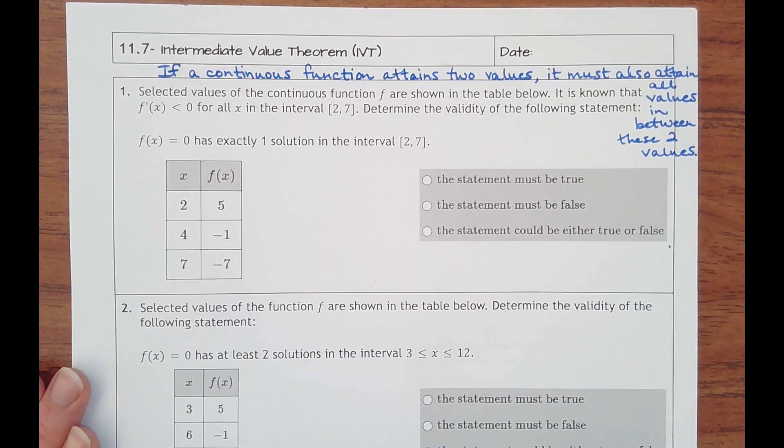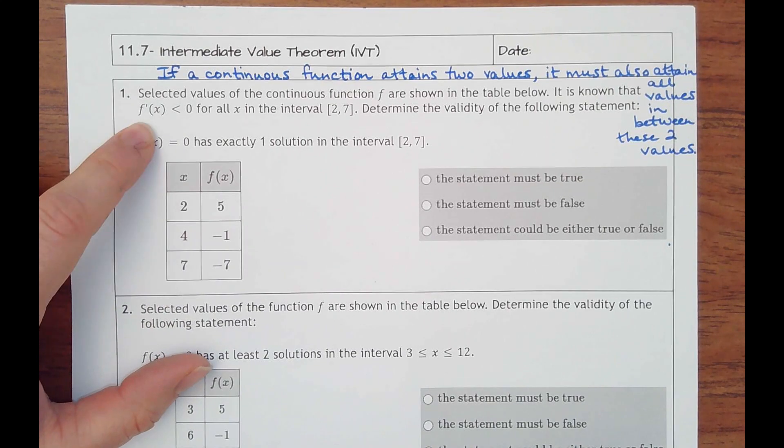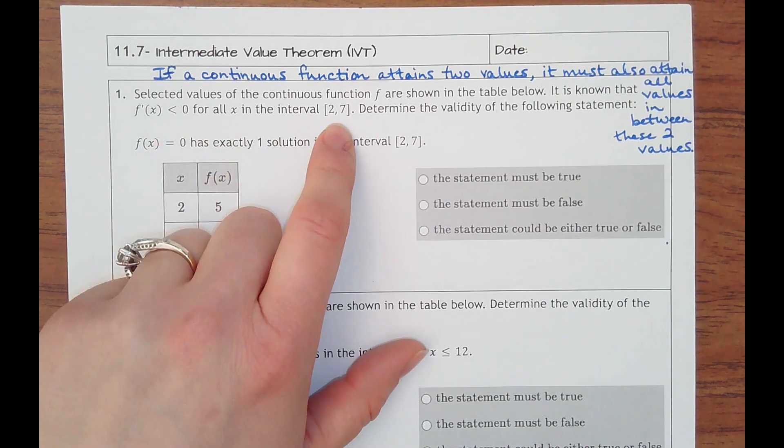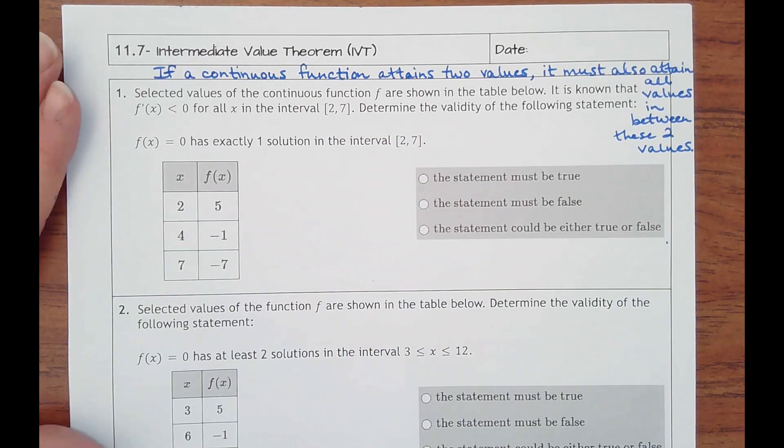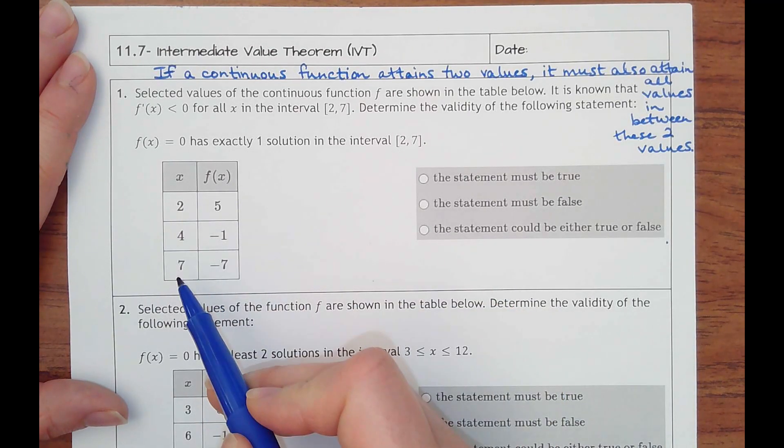And so number one says selected values of the continuous function f are shown in the table below. It is known that f prime of x, so the derivative of x, is negative for all x in the interval two to seven. Determine the validity of the following statement.